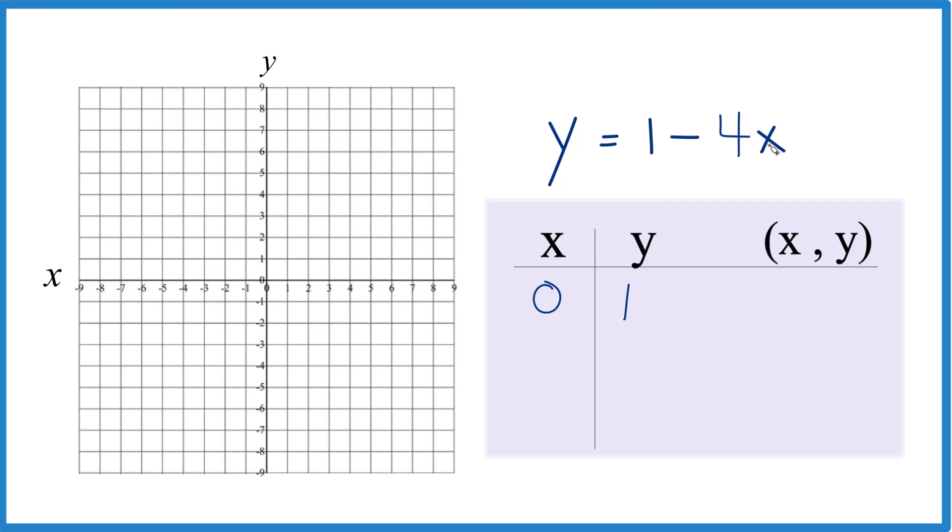How about we put in just 1? 1 minus, so negative 4 times 1 is negative 4. So 1 plus negative 4, that gives us negative 3.